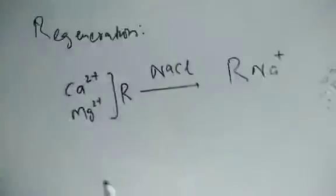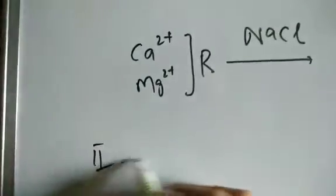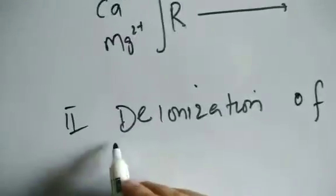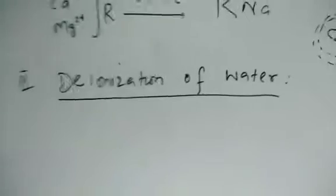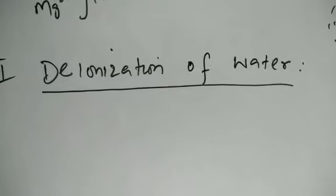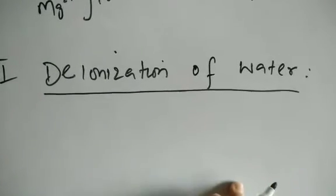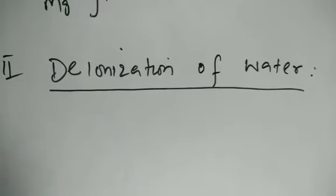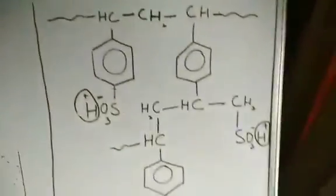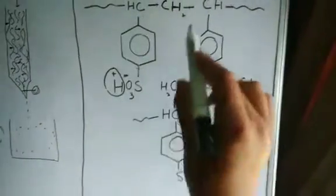Application number two is the deionization of water — also called demineralization. The word deionization reflects removing ions from the water. For this purpose, we use our cation exchanger resin, but this time not in the sodium form — we use it in the H-form: R–SO3H.